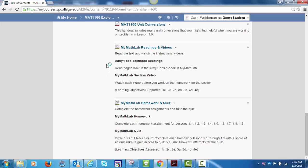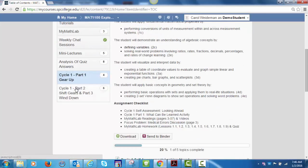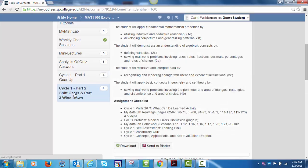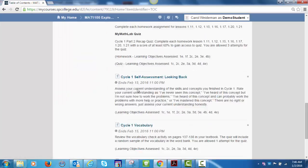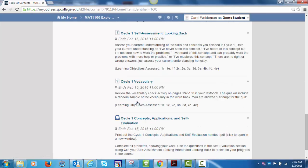At the end of each cycle—Cycle 1 Part 2, Cycle 2 Parts 2 and 3, Cycle 3 Parts 2 and 3, Cycle 4, and Cycle 5 Part 2—you will complete a self-assessment looking back, a vocabulary quiz, and a concepts and applications evaluation. These assignments are available in MyCourses.